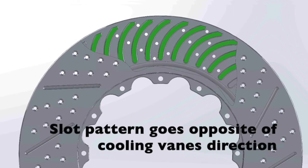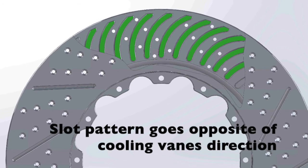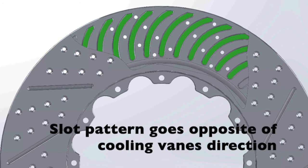Whether you have a plain, slotted, or slotted drilled and zinc plated rotor, the important thing to remember is that the vane structure always points to the back of the vehicle.